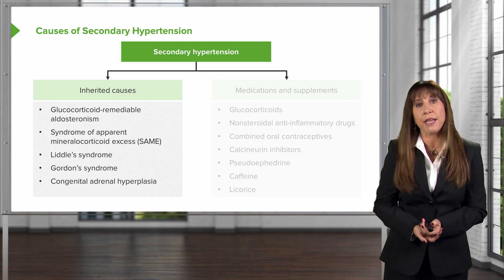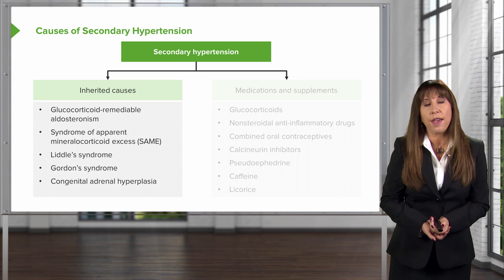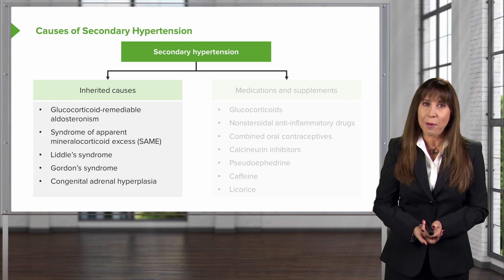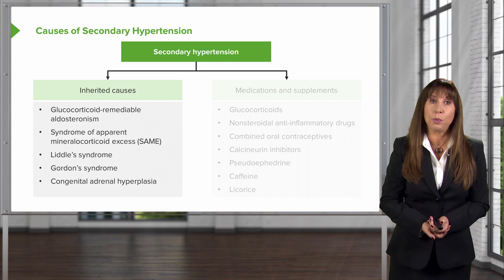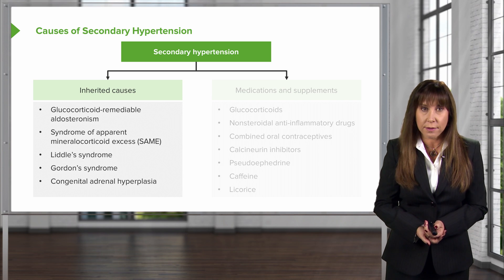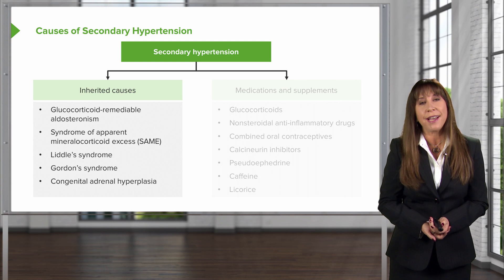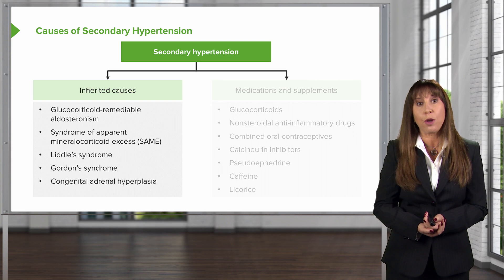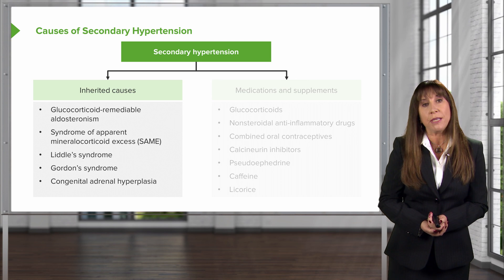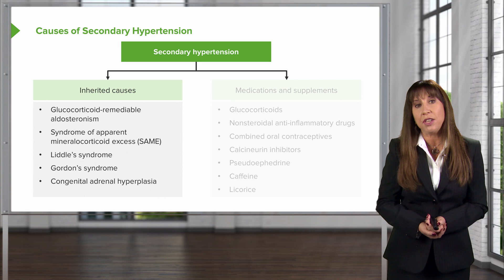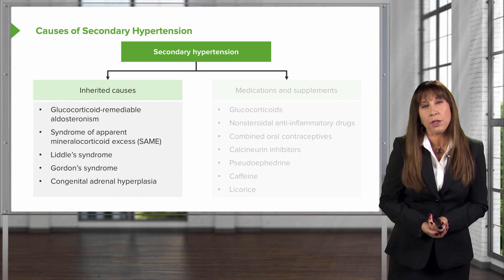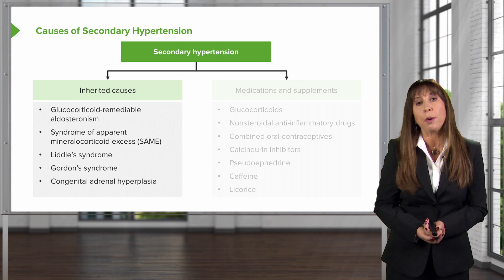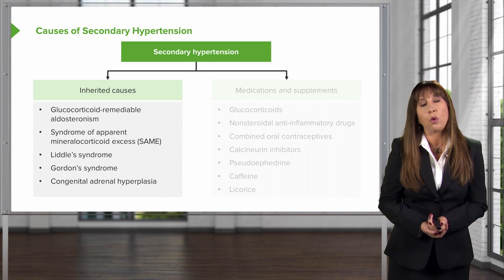There are also some inherited causes of secondary hypertension. Glucocorticoid-remediable aldosteronism is ACTH-dependent aldosterone production, causing mineralocorticoid excess. Syndrome of apparent mineralocorticoid excess involves excess cortisol levels activating mineralocorticoid receptors. Liddle syndrome is a gain-of-function mutation at the epithelial sodium channel. Gordon syndrome is essentially a gain-of-function in the sodium chloride cotransporter in the distal convoluted tubule. And congenital adrenal hyperplasia, specifically the 11-beta-hydroxylase variant, also causes mineralocorticoid activation.